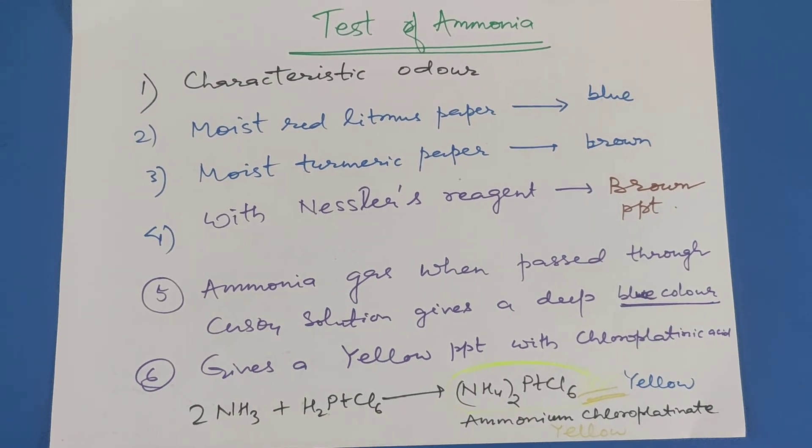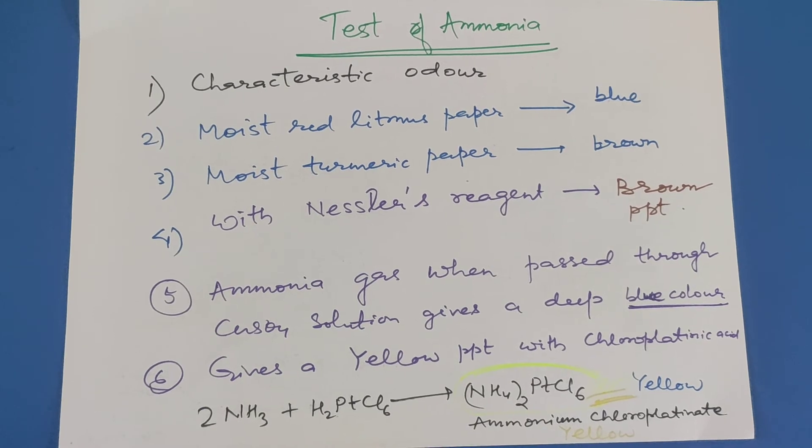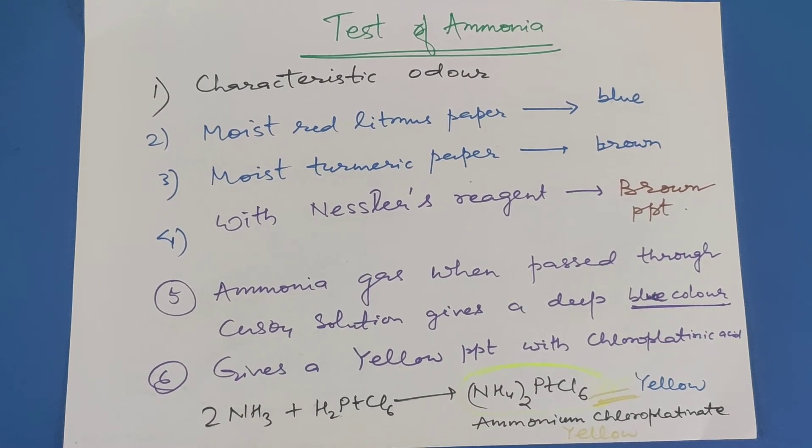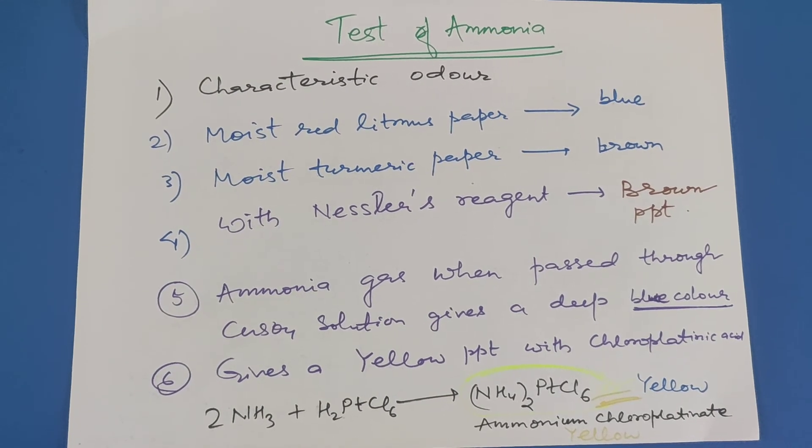Ammonia has a characteristic odor. Moist red litmus paper turns blue in presence of ammonia. Moist turmeric paper turns brown. With Nessler's reagent, it gives brown precipitate or coloration.